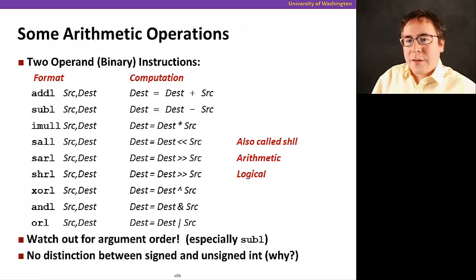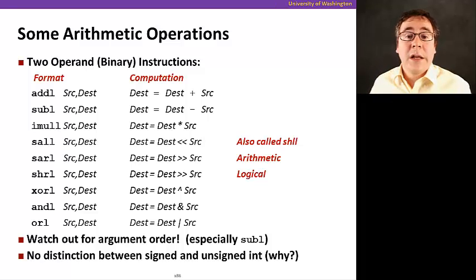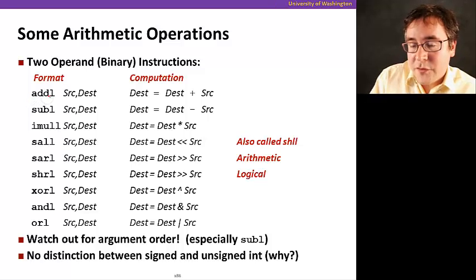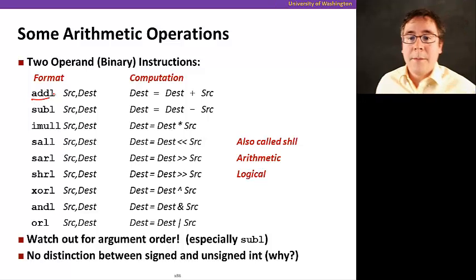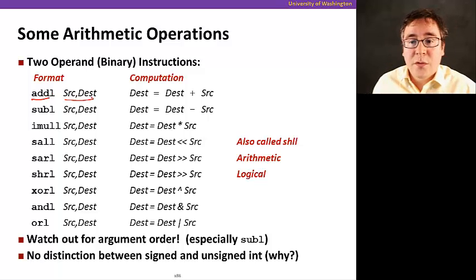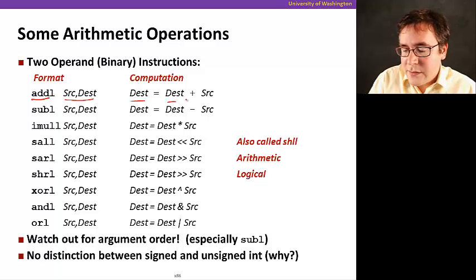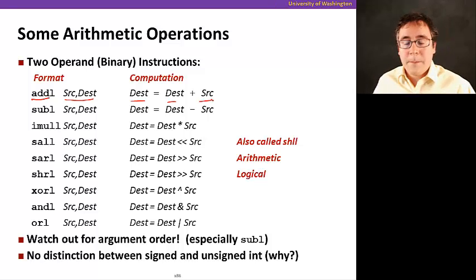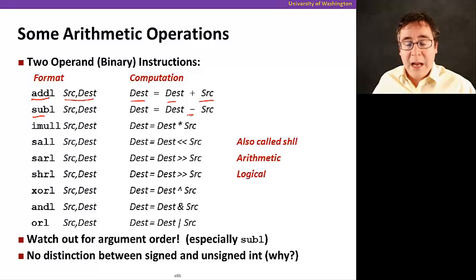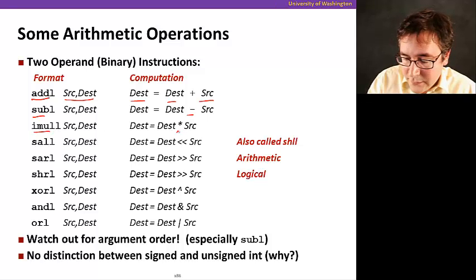Now, I'll tell a bit about some other arithmetic operations, and then we're going to put everything together into a large example. A larger example. So, here we're doing, you know, we have a bunch of instructions. The first one does an arithmetic addition. So, it takes two operands, the source and destination, and it gets destination equals destination plus the source. The sub is very similar, except that it does subtraction. And IMUL, same thing, except that it does multiplication.